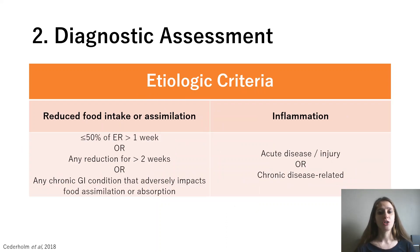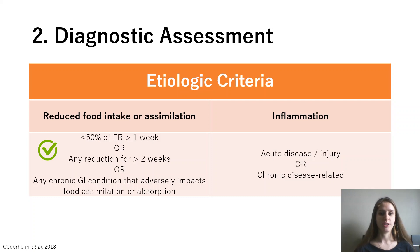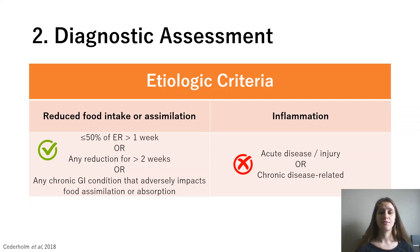Moving on to the etiologic criteria — she does have reduced food intake because she's trying to avoid the dumping syndrome, and she also has reduced food assimilation or absorption because of the dumping syndrome itself, so she meets that first criteria. On the other hand, she presented with no inflammation and all her inflammatory markers were normal. Now that we've looked at the diagnostic assessment, we can classify her as malnourished because she has met one criterion from the phenotypic criteria and one from the etiologic criteria.